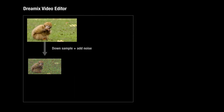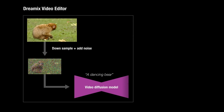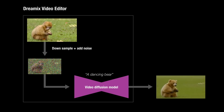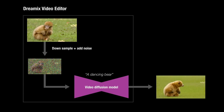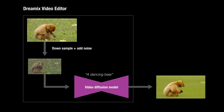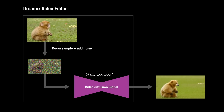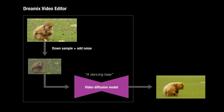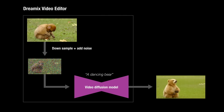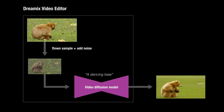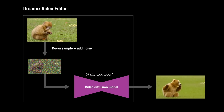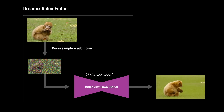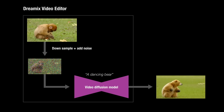Our method, Dreamix, adapts text-to-video models for video editing. To do so, we corrupt the video with severe downscaling and noise addition, and then process it with the video diffusion model, guided by the textual prompt. This process enables the model to reimagine details that align with the text prompt while preserving the attributes of the original video.